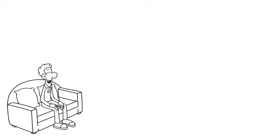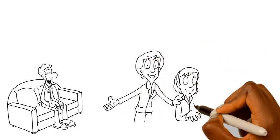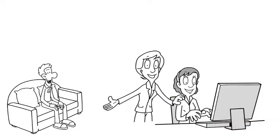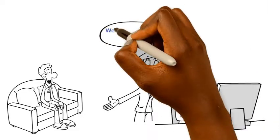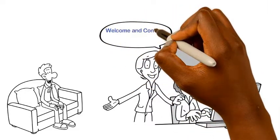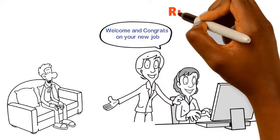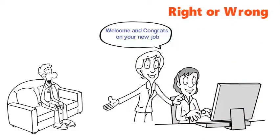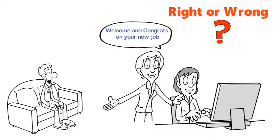Scenario 5. A government officer gets a job for her cousin as an accountant at her office. The job was not advertised even though her cousin Shamima is an excellent accountant. Was the government officer right in employing her cousin? Why is she right or wrong?